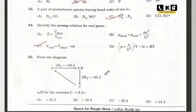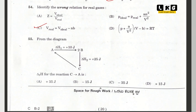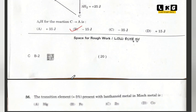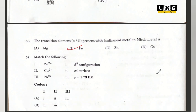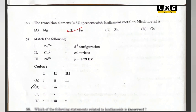Question number 55: from the diagram, the delta RH for the reaction C to A — option B is correct. Question number 56: the transition element present with a lanthanoid metal in the misch metal is option B — iron. Question number 57: match the following regarding zinc — option B is correct.